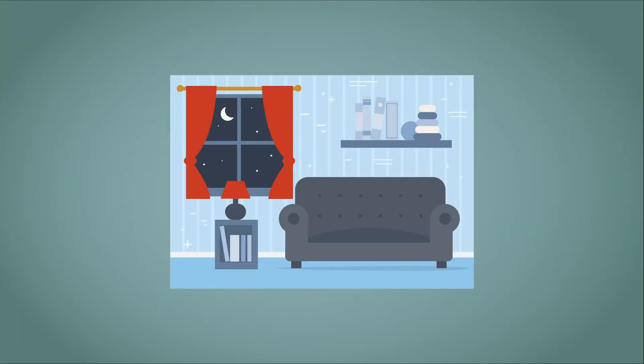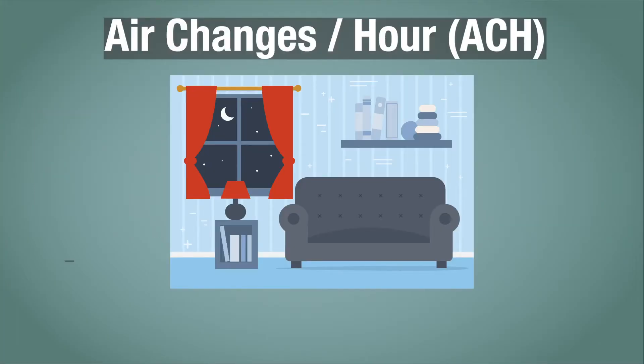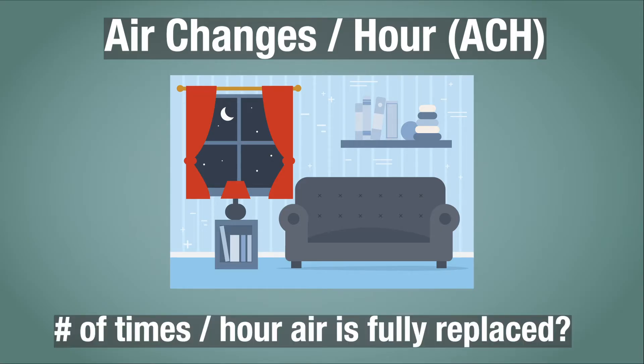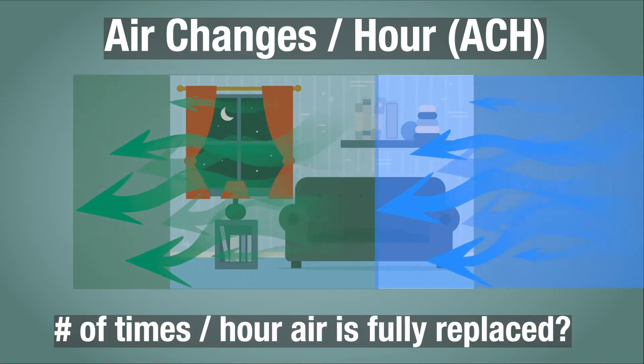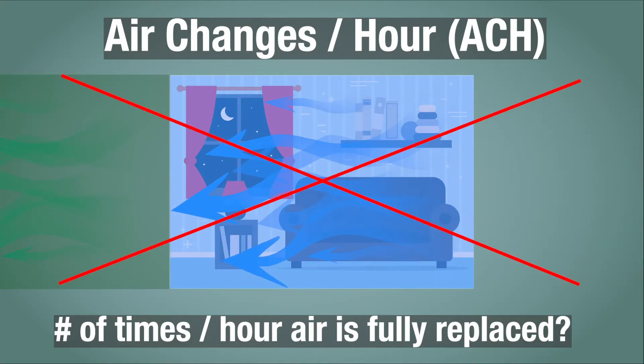Ventilation rates for rooms are measured in air changes per hour. People typically think of this as the number of times per hour that the air in the room is fully replaced with clean air, but that's not how it works.